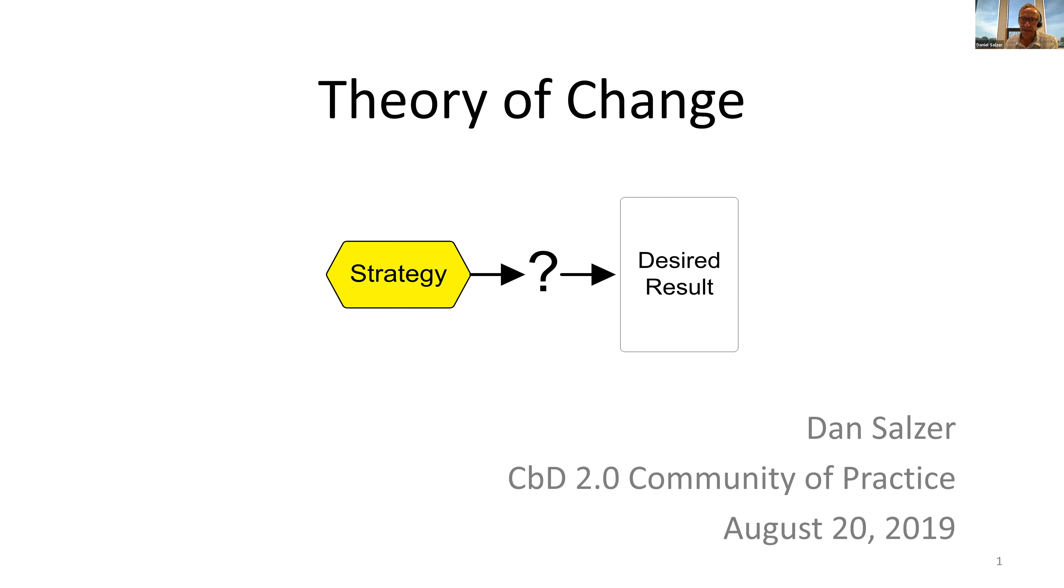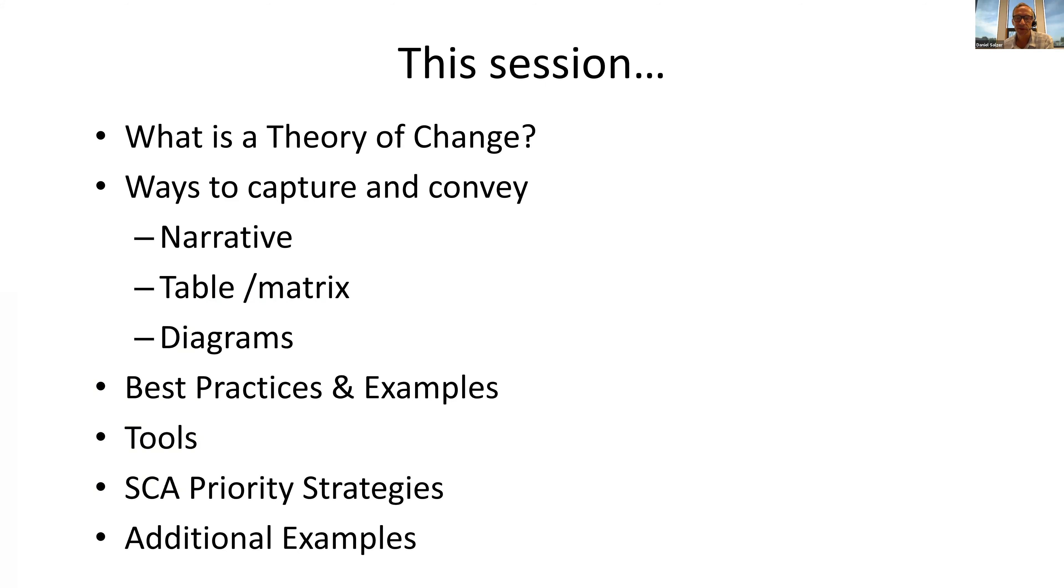What I'm going to cover is defining what a theory of change is, three different options for capturing and conveying a theory of change: the narrative or text-based approach, table or matrices, and diagram approaches including results chains. I'll illustrate each with examples and provide best practices.